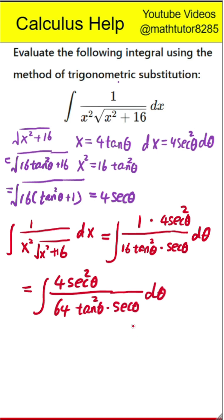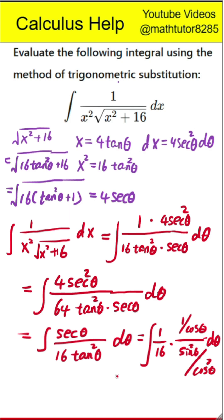Next step is to use identities to simplify. We recall that tangent squared theta equals secant squared theta minus 1. So the integral becomes secant theta over 16 times the quantity secant squared theta minus 1. Alternatively, we can express the integrand using sine and cosine. This results in cosine theta over sine squared theta. So the integral becomes 1 over 16 times the integral of cosine theta divided by sine squared theta.